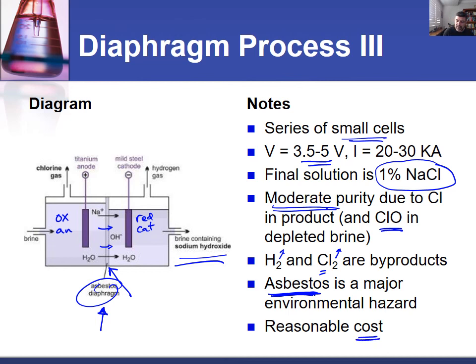The cost of this process is much lower than the mercury cell — we've solved the problem of mercury, but we haven't solved the problem of asbestos yet. We'll do that in the final video in this series. Thanks for watching.